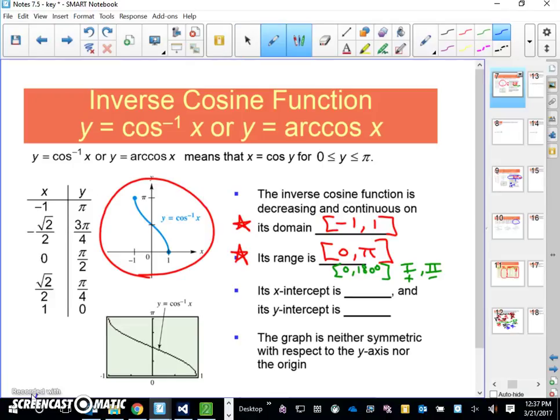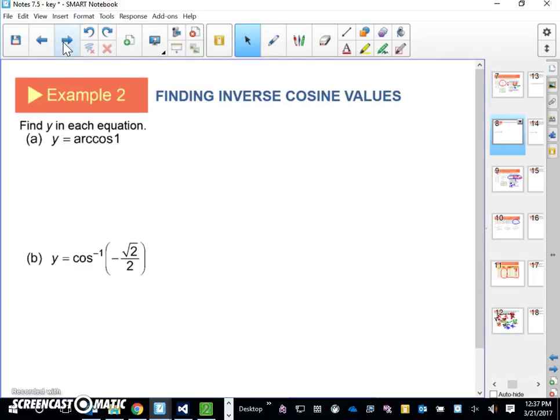So it's really important that you can think about the domain and the range of all of these inverse trig functions. x-intercept is at 1, y-intercept is at pi over 2, and there is no symmetry. So let's do some examples. Example 2, we're finding inverse cosine values. Find y.